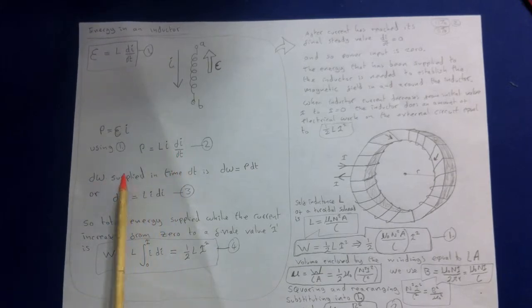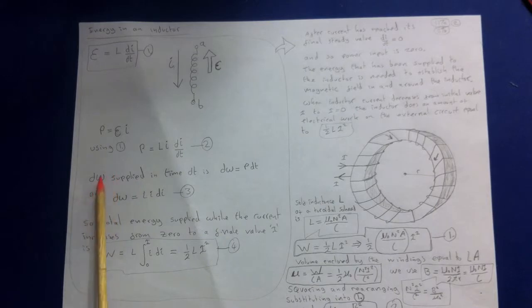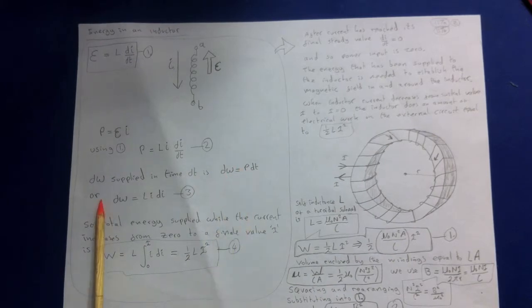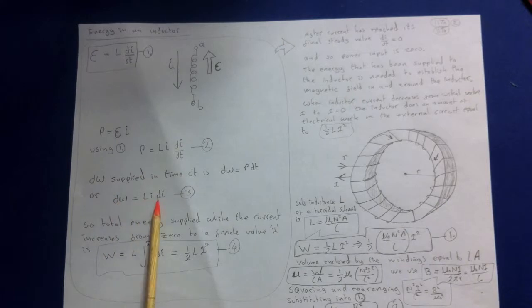What we want to do again is, like we did with the capacitor, we want to work out a small amount of the energy supplied in time dT. The small amount of energy is going to be the power times dT. We can write dW equals L I dI.